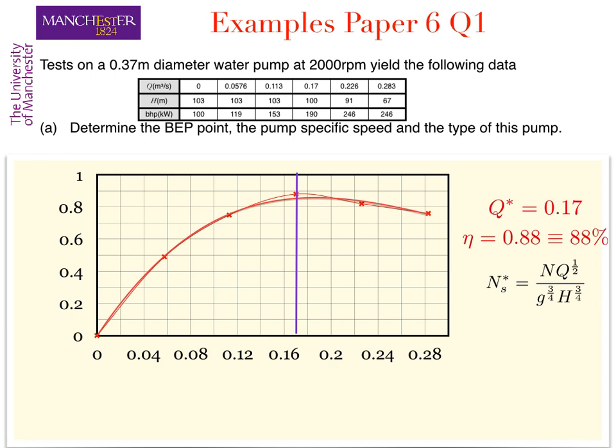For the graph given in the data book we need the rotational speed in revolutions per second, so for N is 2000 we divide this by 60 to find the revolutions per second as 33.3 revolutions per second.